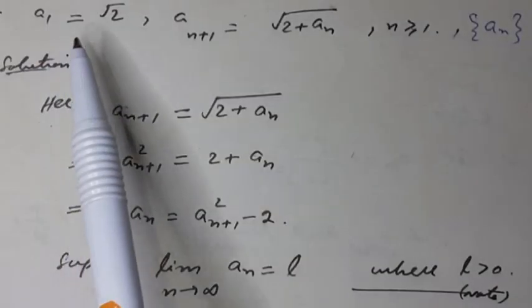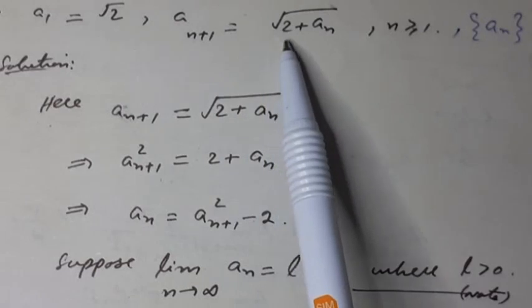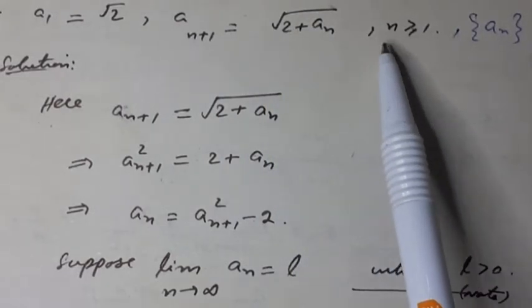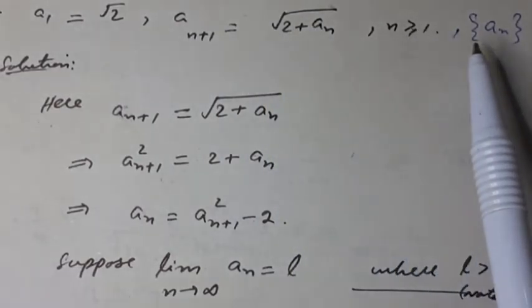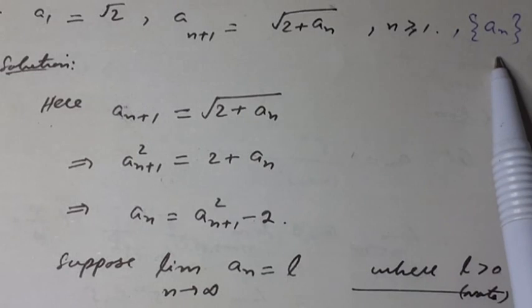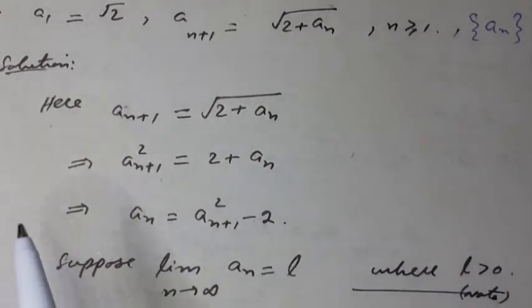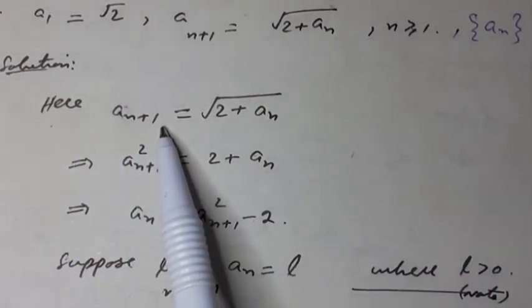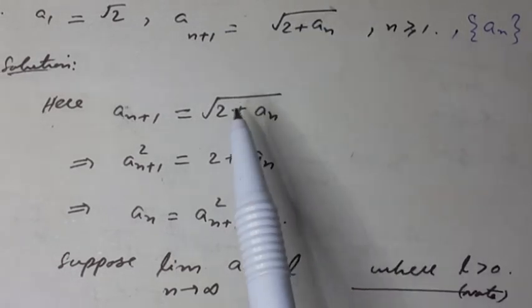a₁ is equal to √2, and aₙ₊₁ is equal to √(2 + aₙ), where n is greater than or equal to 1. Check the convergence of the sequence aₙ. Solution: here aₙ₊₁ is equal to √(2 + aₙ).